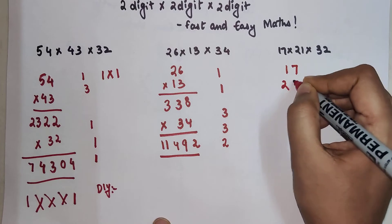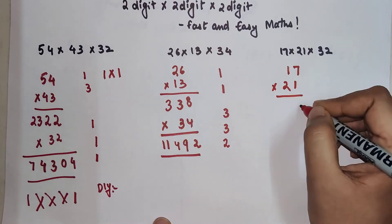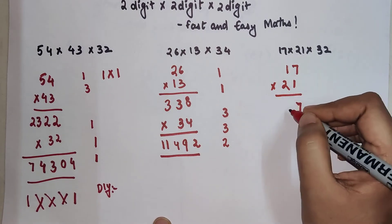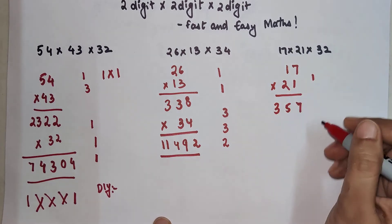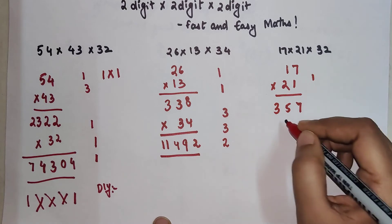So we have 17 into 21 into 32. So we will do 17 into 21 first. Which is 7. Then 1, 14. So 15, 1 carry. Then 2, 3. 2 plus 1 which is 3. So we have 357.